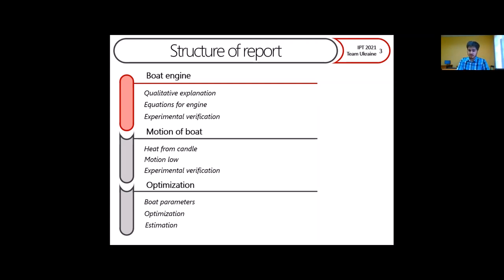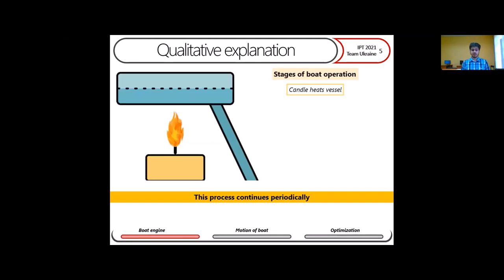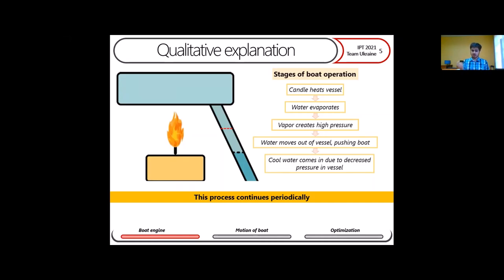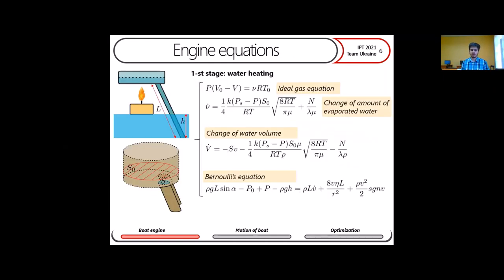Here we observe that the candle heats the boiler and water starts to evaporate. This evaporation increases the pressure, which pushes water out of the boiler. Due to inertia, water passes the point of equilibrium, and now we have lower pressure and water starts to return inside and boil again. This process continues periodically.